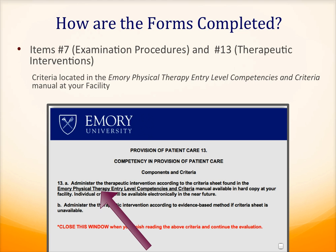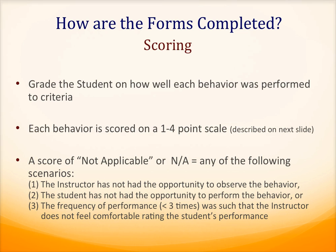Now that you've accessed the form and found the location of the criteria for the objectives, how do you actually go about scoring the student? You will assess the student's performance of how well he or she performed each component behavior to criteria on a four-point scale. There is also the option of scoring the student a not applicable, or N.A., on a behavior. You would score an N.A. if you have not observed the student on a behavior, the student has not had the opportunity to perform the behavior, or you feel that the number of times you have observed the behavior yields insufficient data to rate the student.